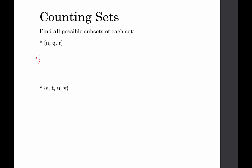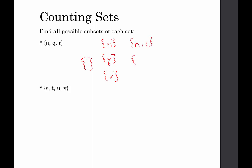Let's try this out. We're going to include our null set. Then a column containing just one element each: we have {n}, {q}, and {r}. Now the sets containing two elements: we can have {n, r}, {n, q}, and {q, r}. And then we could have one set containing all three: {n, q, r}.